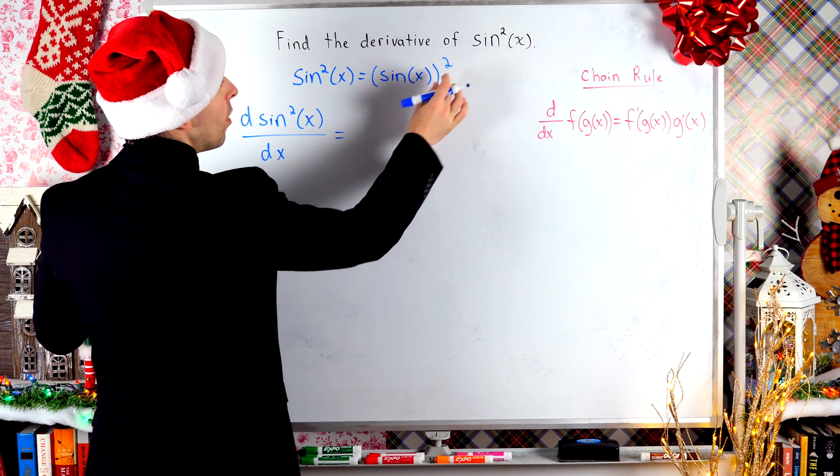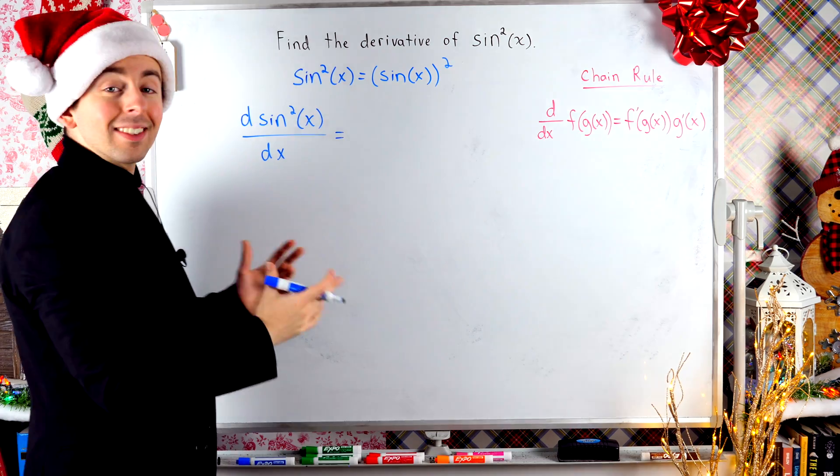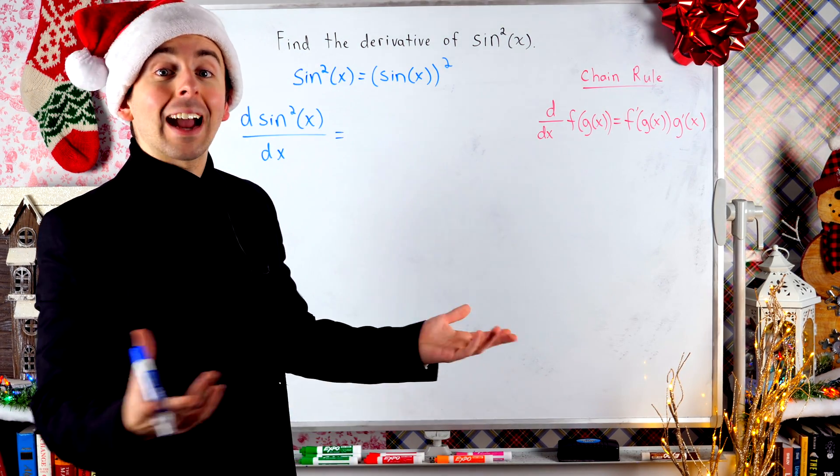The outside function is a thing squared. So it's like the outside function is x squared.